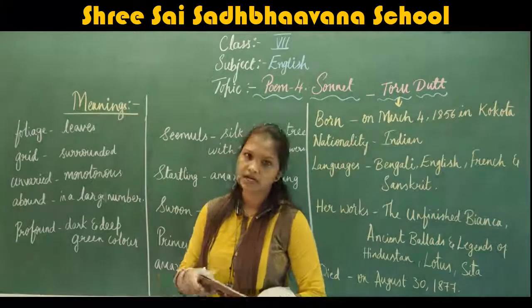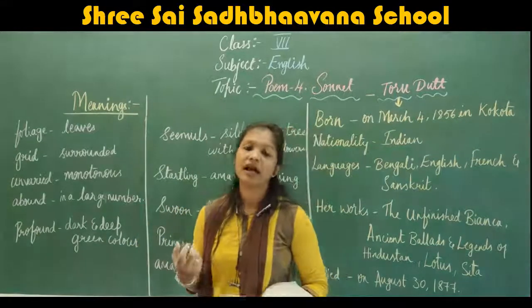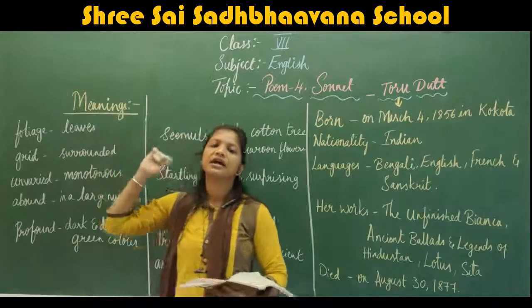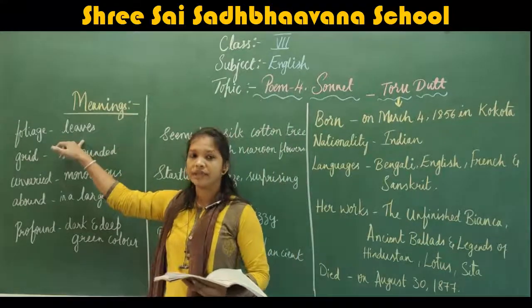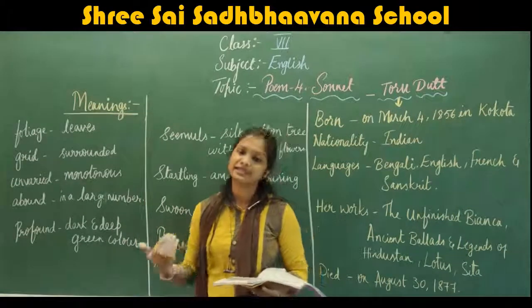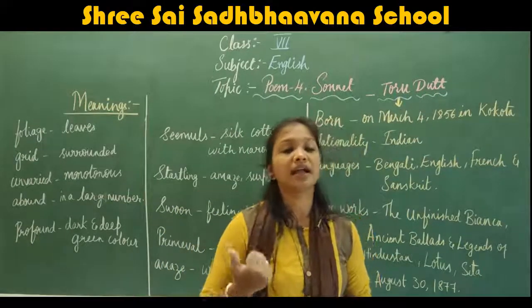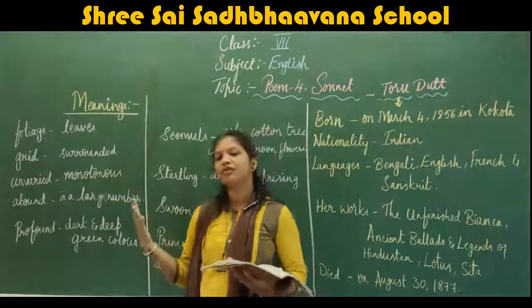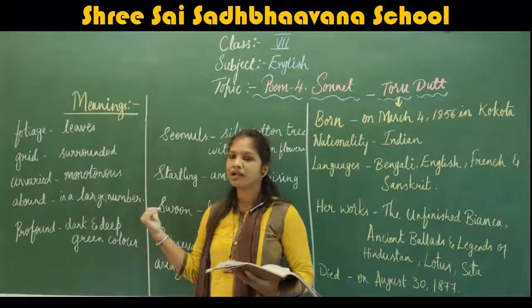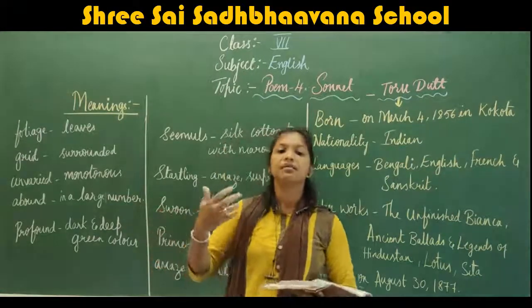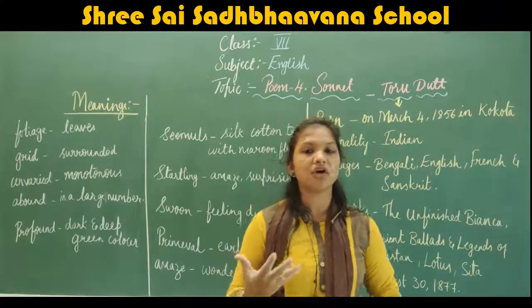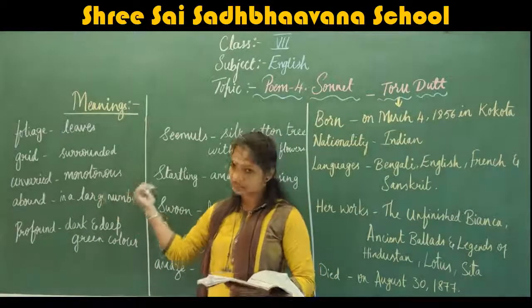The poet describes the beauty of the garden around her bungalow. She says her garden appeared like a sea of foliage — foliage meaning leaves. Her garden is surrounded by thick leaves. However, she advises us not to come to a hasty conclusion that her garden has only one dull, monotonous green color like the sea.